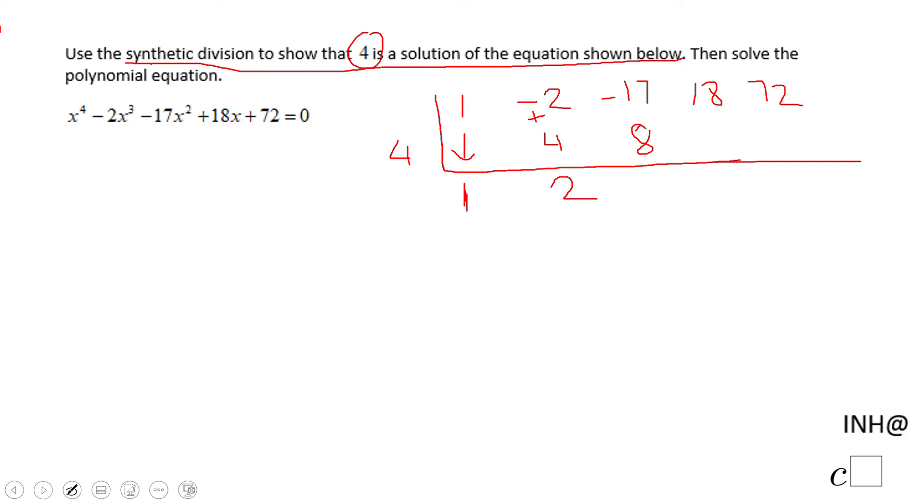Negative 2 plus 4 is positive 2. 4 times 2 is 8. Negative 17 plus 8, that will be negative 9. 4 times negative 9 is negative 36. If we add this we get negative 18. 4 times negative 18 is negative 72.